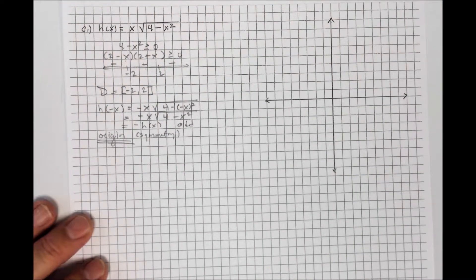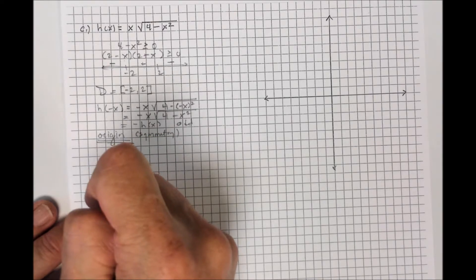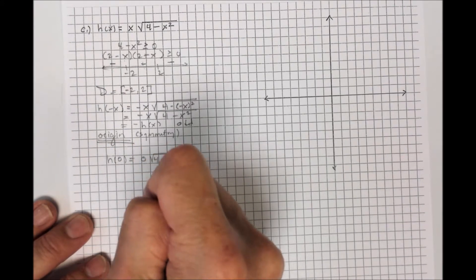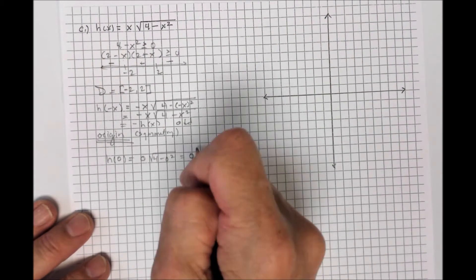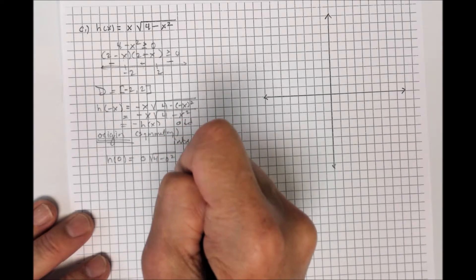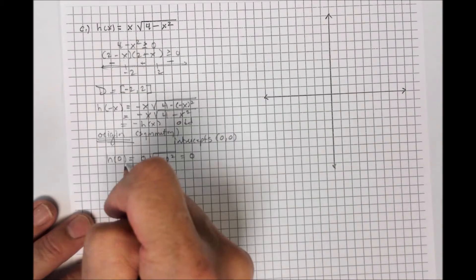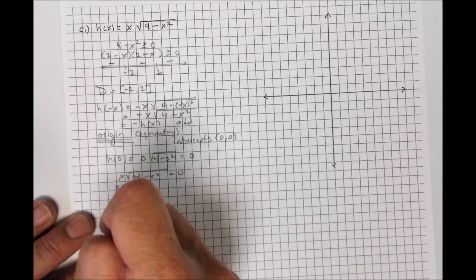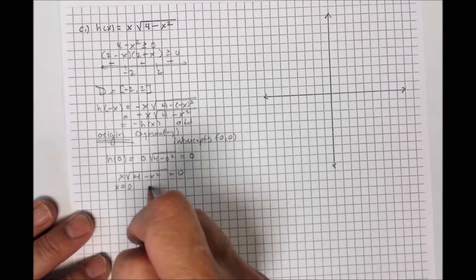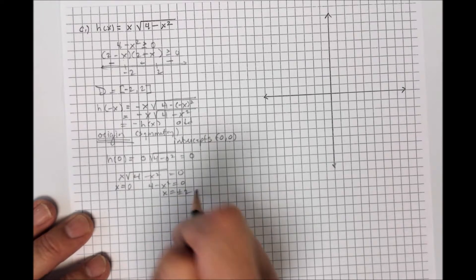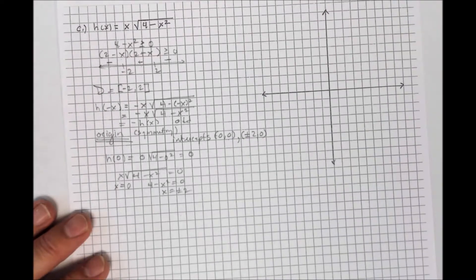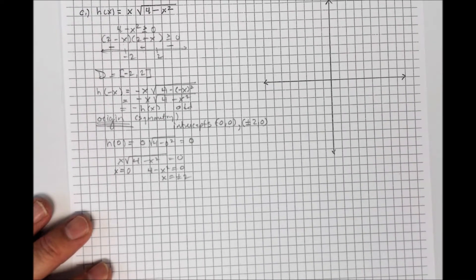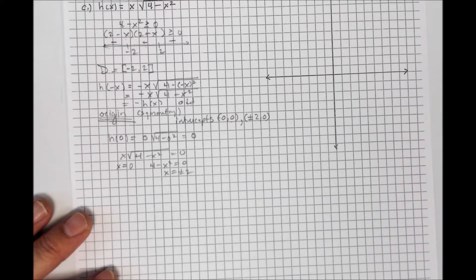For intercepts: h(0) = 0·√4 = 0, so (0,0) is both a y-intercept and x-intercept. Setting y = 0: x√(4 − x²) = 0, which gives x = 0 or 4 − x² = 0, so x = ±2. So all three intercepts are (0, 0), (2, 0), and (−2, 0) — the endpoints of the domain. There are no asymptotes to worry about since it's a radical with finite domain.